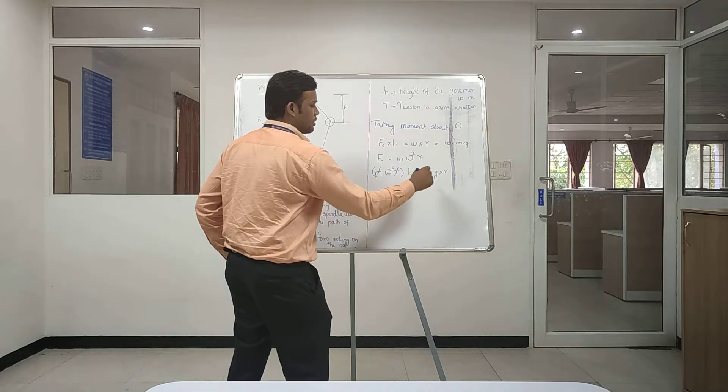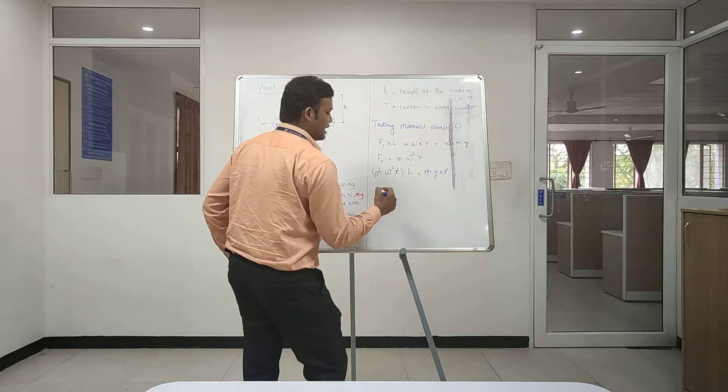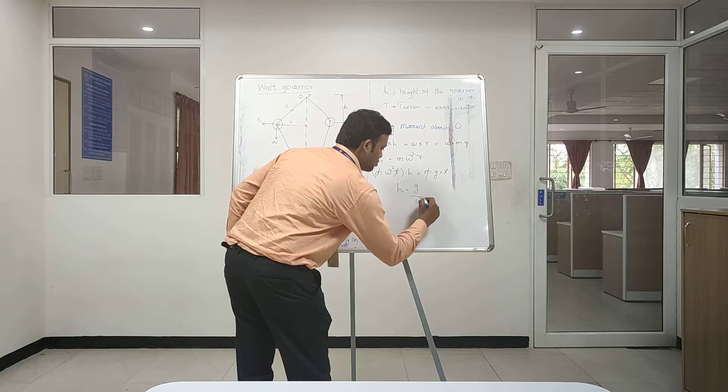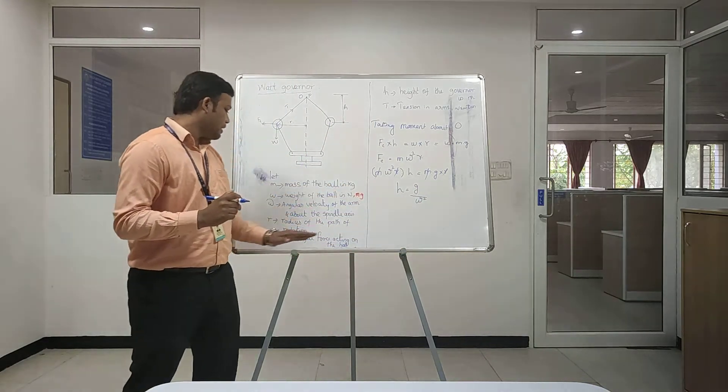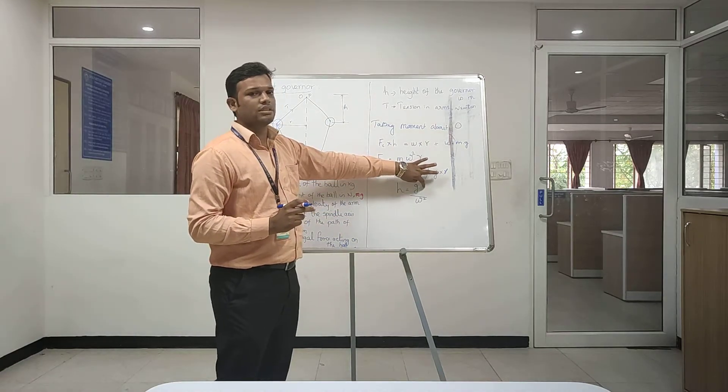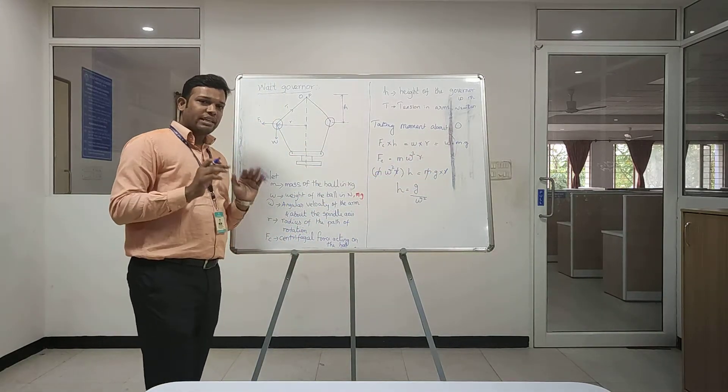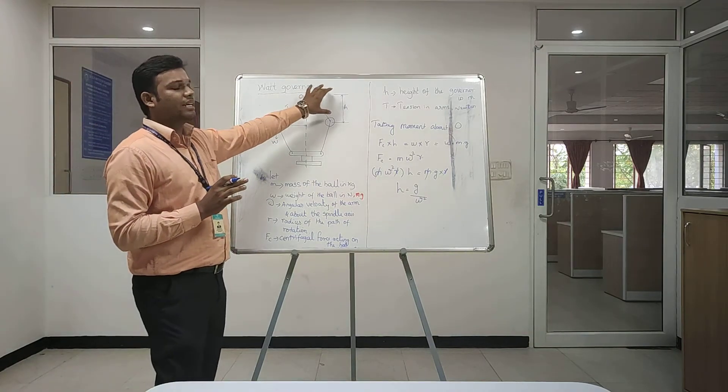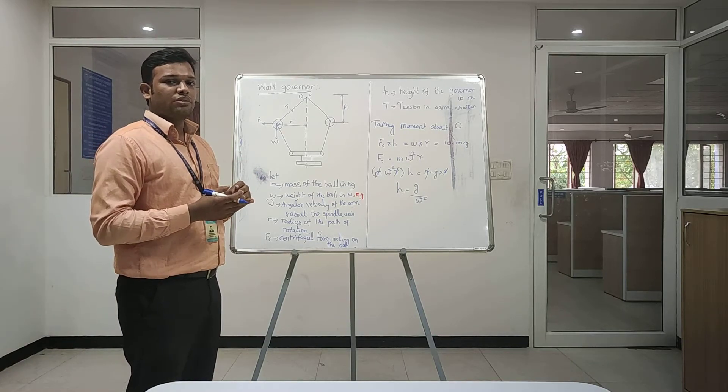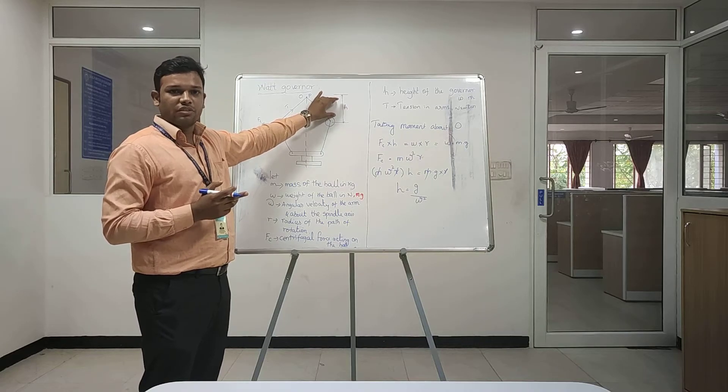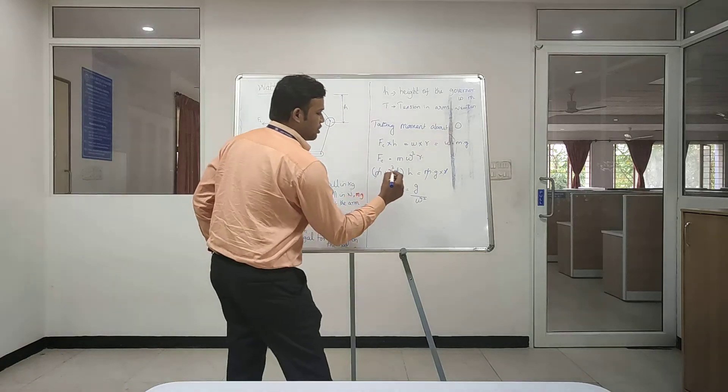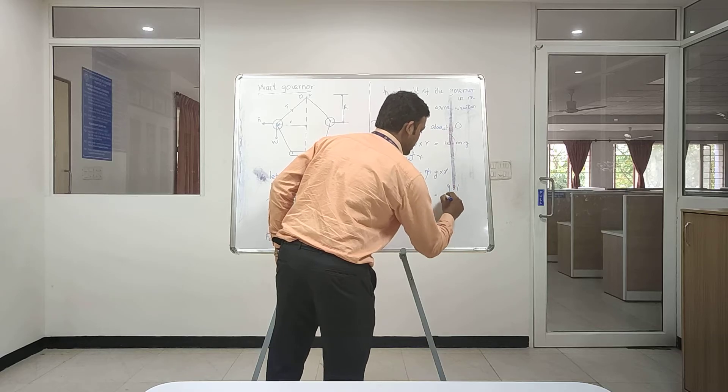From this equation the same component will get cancelled. This m and m will get cancelled, r becomes cancelled. So the final equation will be h equal to g divided by omega square. We know that omega is angular velocity of an arm above the axis. Then h is the height of the governor, g is the acceleration due to gravity. Our ultimate aim of Watt Governor is to calculate the height of the governor because the speed of an engine will vary. When you give a maximum speed, the height of the governor will vary. When it rotates in a minimum speed, height of the governor will vary. We know the value of g, g is 9.81.